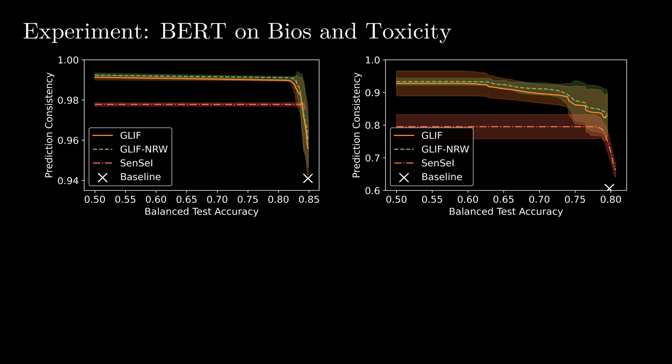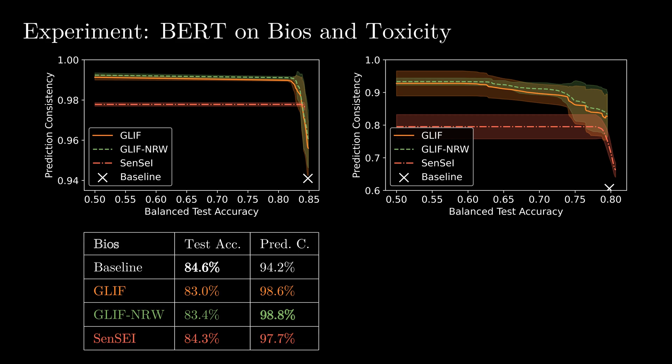We post-process the baseline using our Glyph and Glyph NRW, as well as the Sensei sensitive set invariance for enforcing individual fairness method. Sensei is an in-processing method, that is, it requires retraining the model, which makes it more expensive than post-processing. On both datasets, we observe that the prediction consistency using our method is significantly better than for Sensei and that it can be achieved at a low drop in accuracy. Specifically, with a drop of only 1.2% accuracy, we can achieve increasing the prediction consistency from 94.2% to 98.8%, which is a substantial improvement. Glyph NRW improves by more than 1% over the Sensei method and is computationally less expensive at the same time.